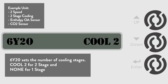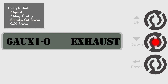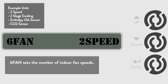For this example we will leave it at two cooling stages. Let's go to 6FAN. This sets the unit's fan speed. The default is 2Speed, and for this video we will just leave it there. But it can be changed to single speed, 2Speed, 3Speed, or VFD for variable speed if needed.